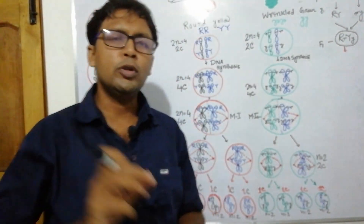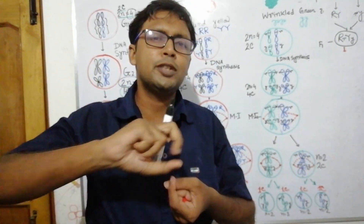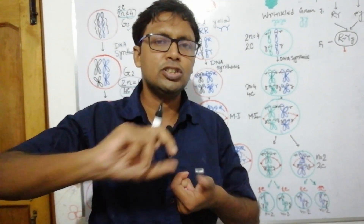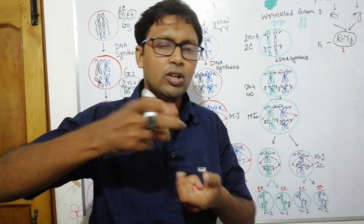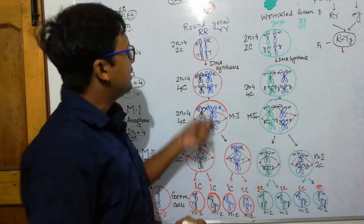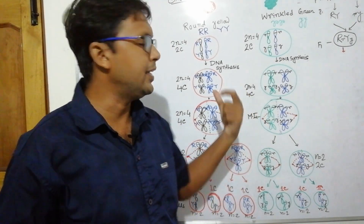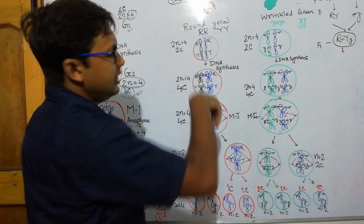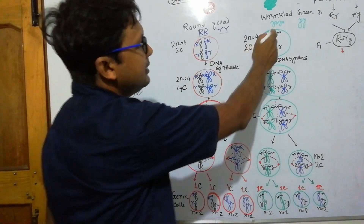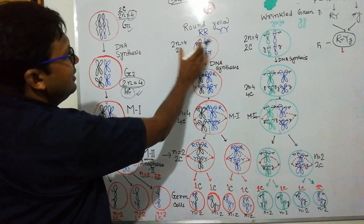So meiosis occurs in this way. Now, regarding the chromosomal theory of inheritance: during the transfer of chromosomes, the trait-determining factors or genes are also transferred along with the chromosomes — that is the theory. To prove it, consider round yellow seeds versus wrinkled green seeds. For round yellow, the genotype is RRYY, both dominant traits.